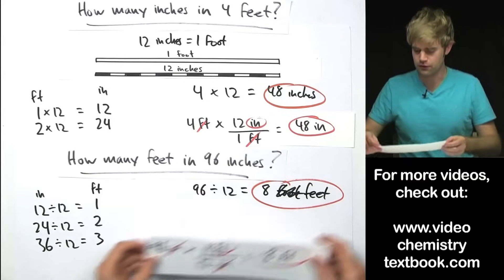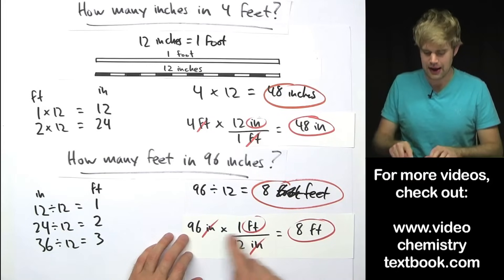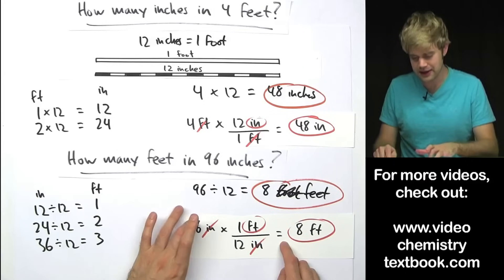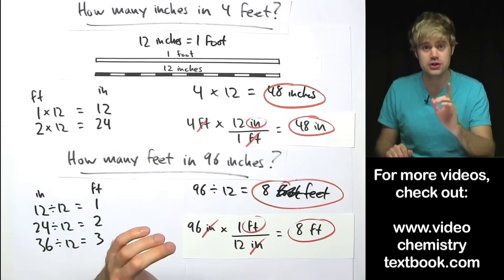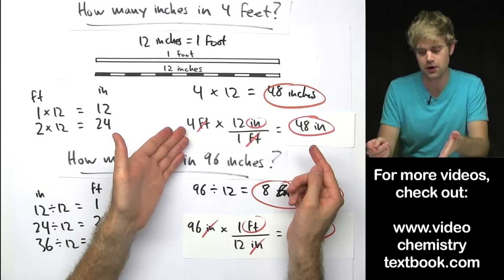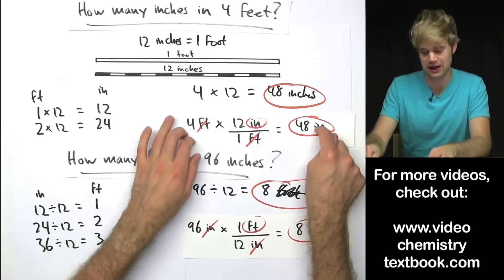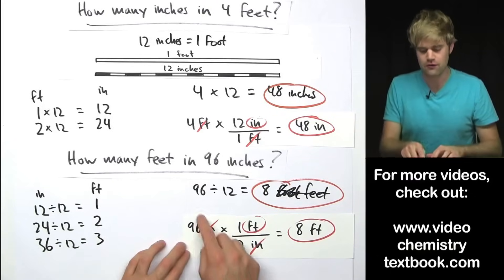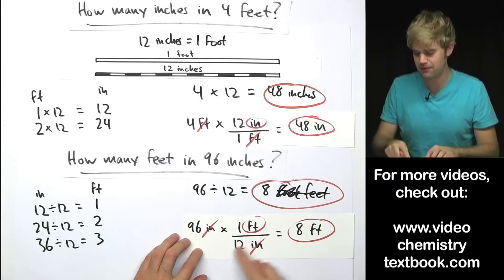To do this problem with a conversion factor, I'd set it up like this: 96 times 1 divided by 12. The inches cancel out, and I do 96 times 1, which doesn't change 96 — it's still 96 divided by 12. So I'm really just doing 96 divided by 12, which is what I have up here. So there are two important things to take away: if you have a number like 12 on the top of a conversion factor, it's the same as doing multiplication — I have 4 feet, so I do 4 times 12. If a number like 12 is on the bottom of a conversion factor, it's just division. For 96 inches, for every 12 inches there's 1 foot, so I'm just doing 96 divided by 12 to get 8.